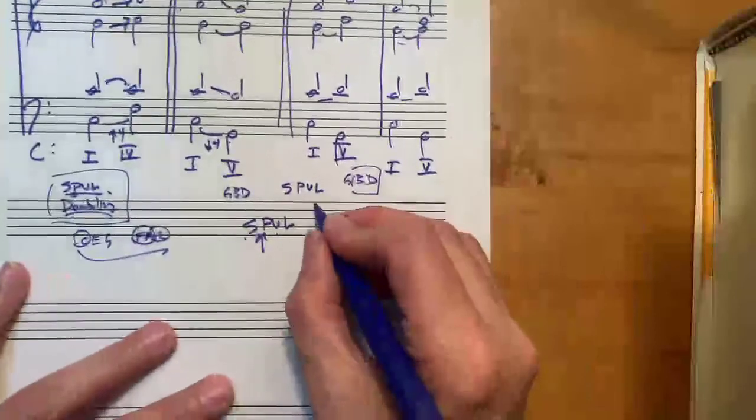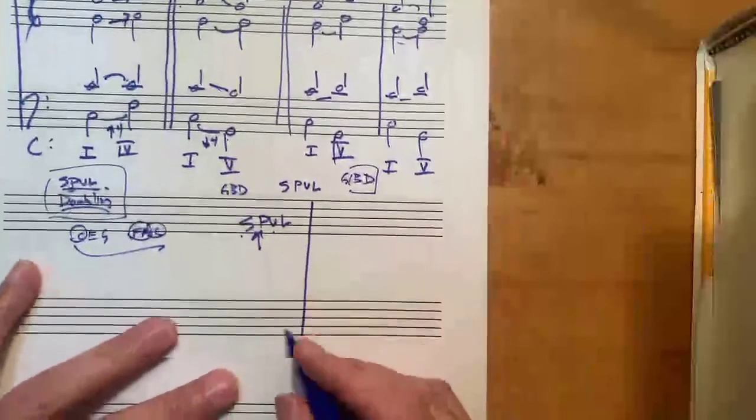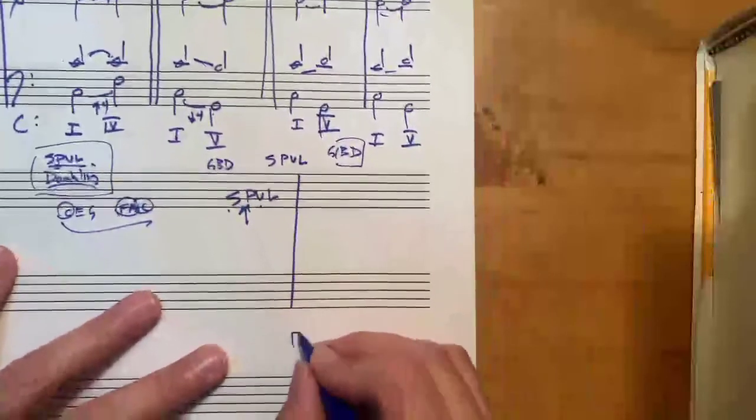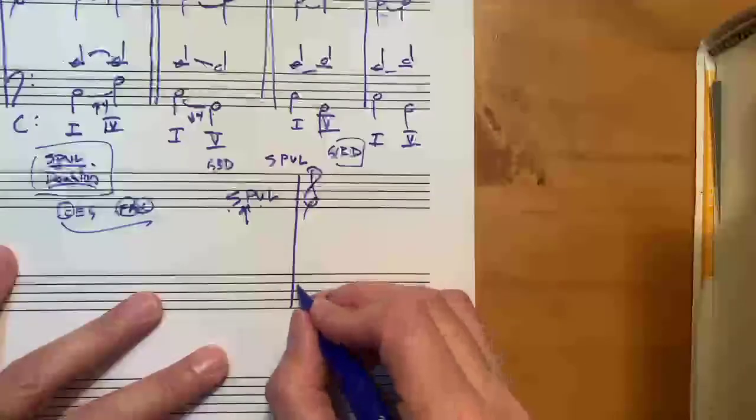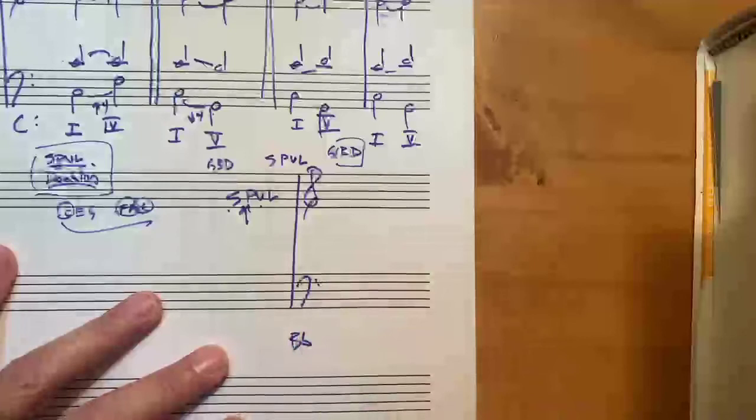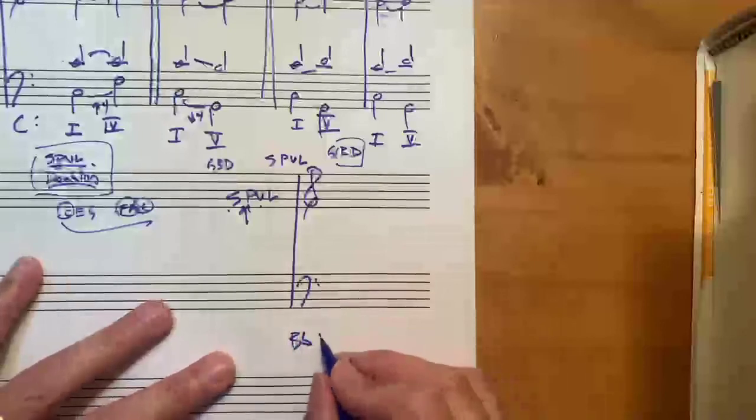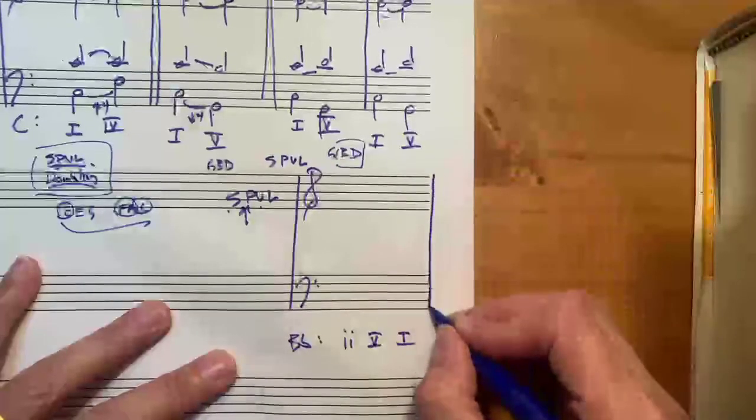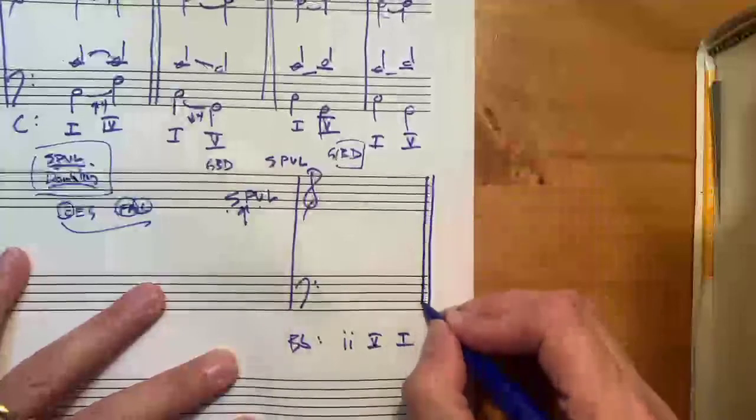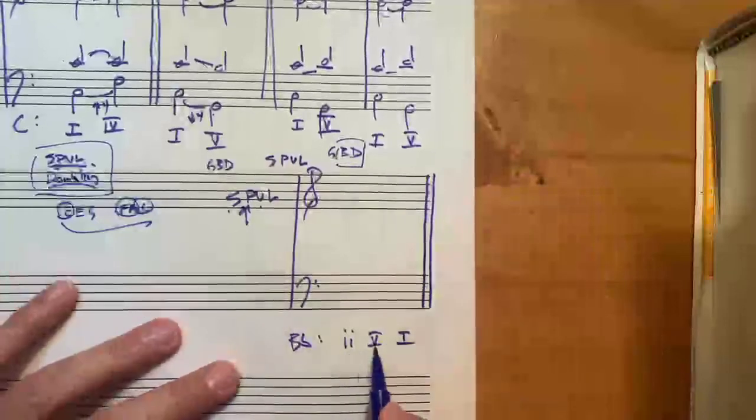Here's what I'd like you to do. Let's do the key of B flat. And I'd like you to go in the key of B flat, two, five, one. So you're going to write three chords, two chord, five chord, one chord in root position.